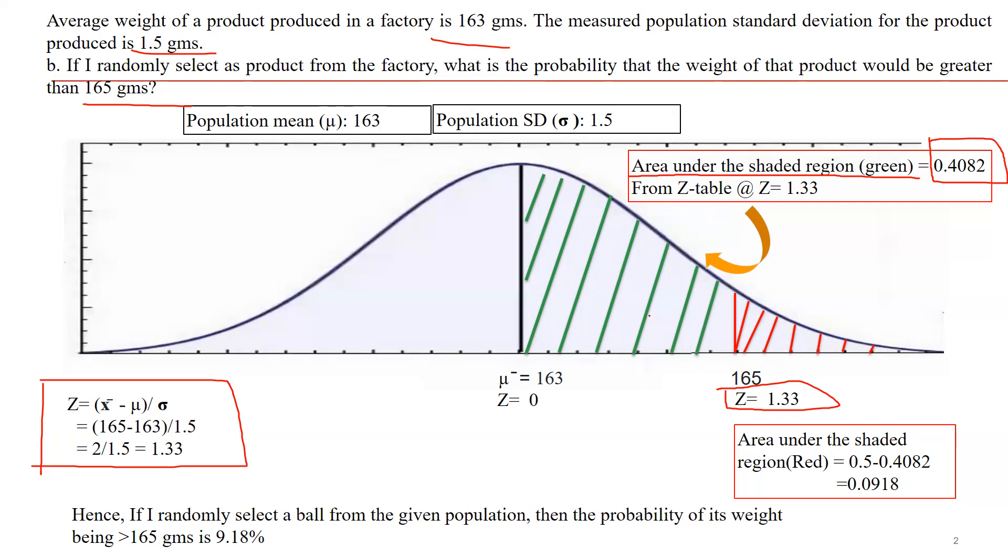The green shaded area is our acceptance region and the red shaded area is our rejection region. How are we going to calculate area under the shaded region, red? The complete area is 0.5. 0.5 minus 0.4082, that is our table value. What is left out is the critical area. In this case, the critical area is 0.0918. This is my rejection region.